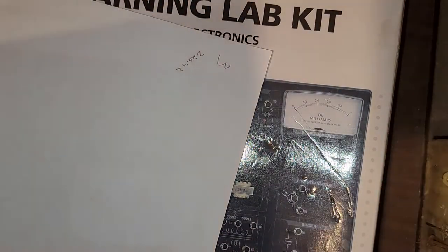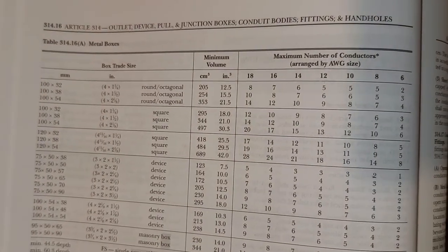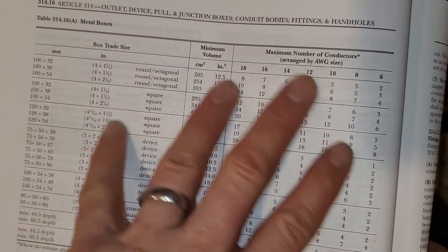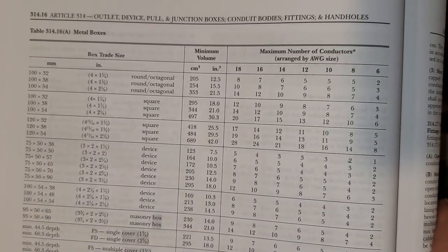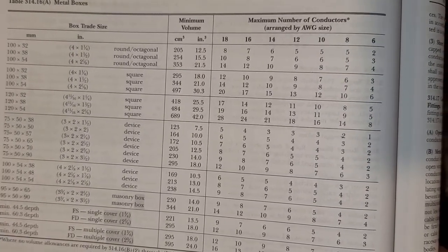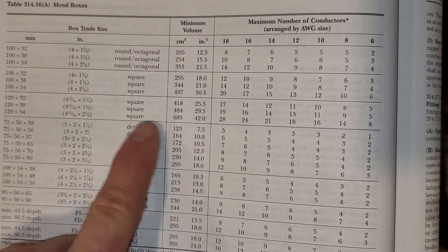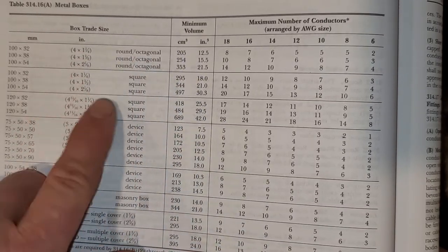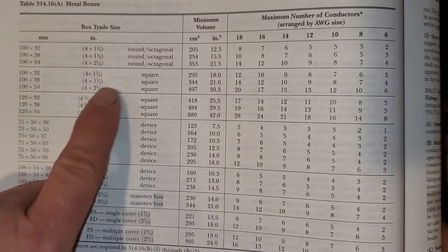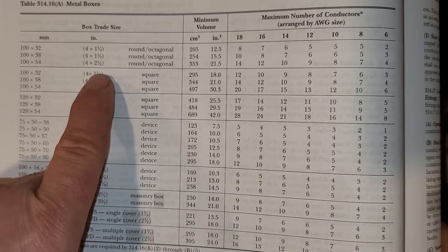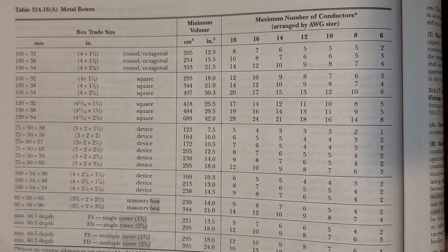This next table is a lot of fun — both of these tables are going to be on the same page, and we're dealing with box fill. Tables 314.16(A) and 314.16(B). When you're reading the table out in the field or being tested, they have a lot of boxes in standard sizes. If you're dealing with a square box, a four-square box, a device box, or round boxes, they have standard sizes you can match with your tape measure.